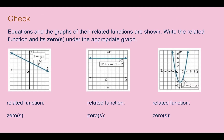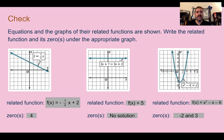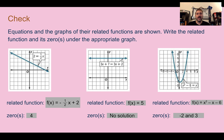Check your understanding: for three graphs, write the related function and the zero or zeros. First graph: f(x) = −½x + 2, zero at 4. Middle graph: f(x) = 5, no solution because it doesn't cross the x-axis. Last graph: f(x) = x² − x − 6, zeros at negative 2 and positive 3.